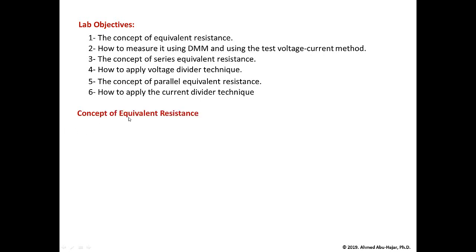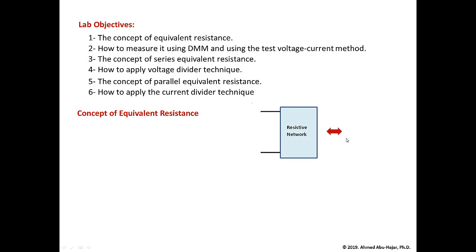The first concept we're going to discuss is equivalent resistance. Assume you have a resistive network — a circuit that has a bunch of resistors connected together with no sources. It's source free, only resistors connected together. We call it a resistive network. This resistive network will have one equivalent resistance, we call it R-equivalent.